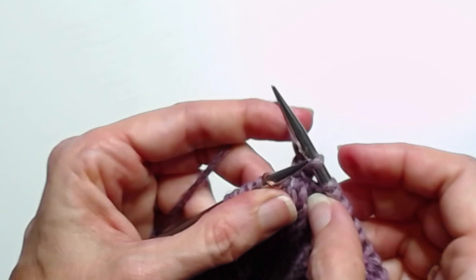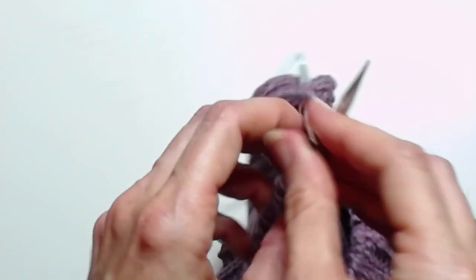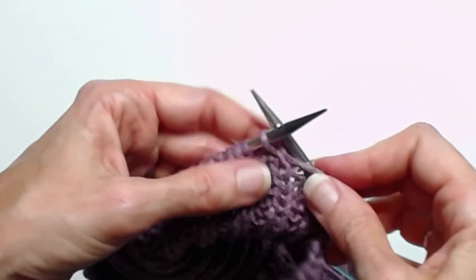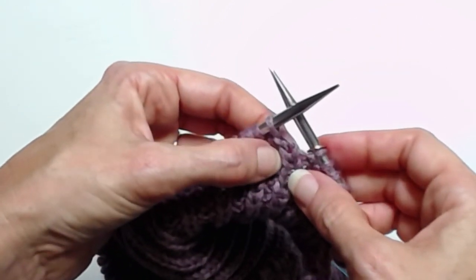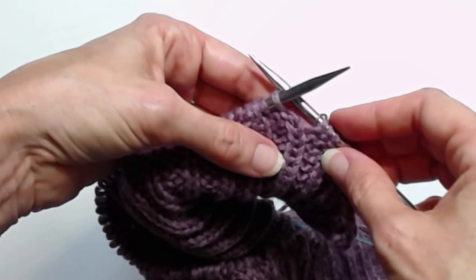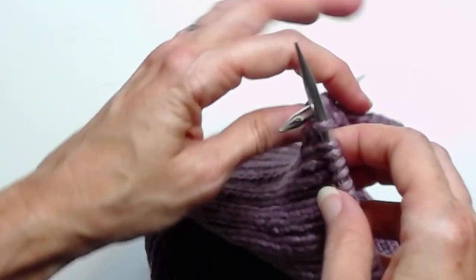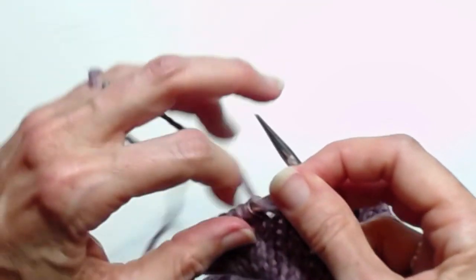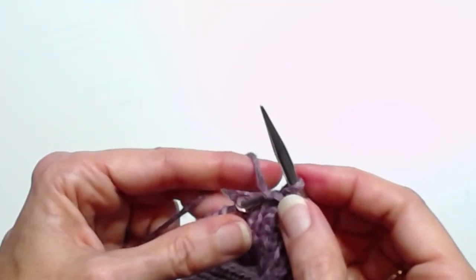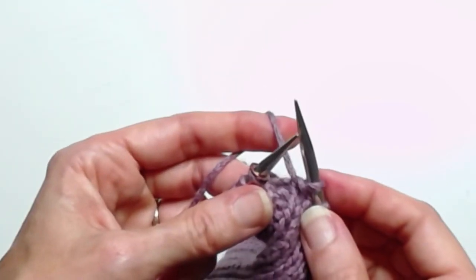And there you have it, the SSP, the single left slanting decrease. It's used on sleeve caps, it's used on raglan shaping which is how I'm using it here, it's used a lot of times when you have to shape on both the right side and the wrong side.